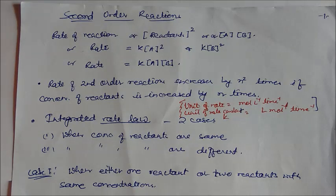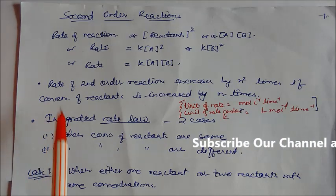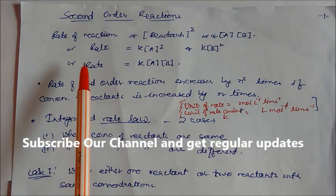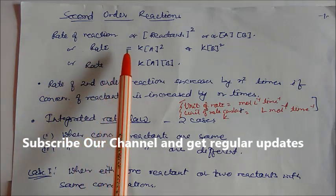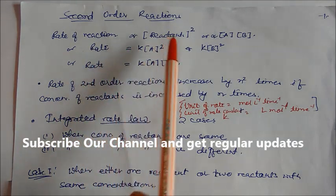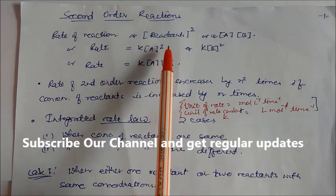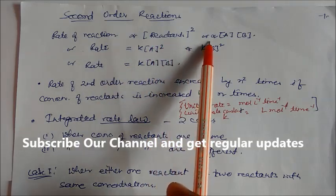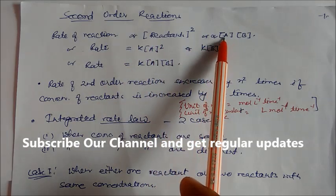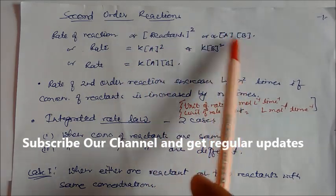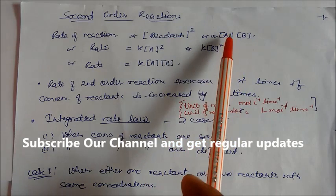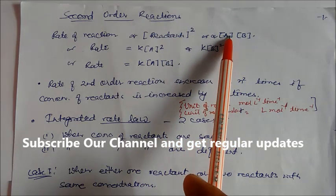Welcome to this session. In this session, we will see the second order reaction. The rate of the reaction is proportional to the square of the reactant, or it is proportional to the square of the two reactants — it can be same or it can be different.